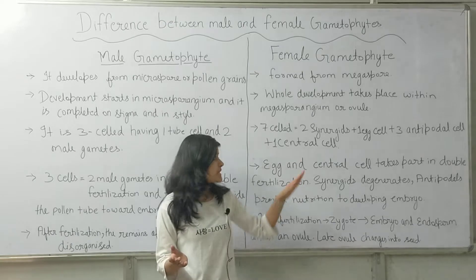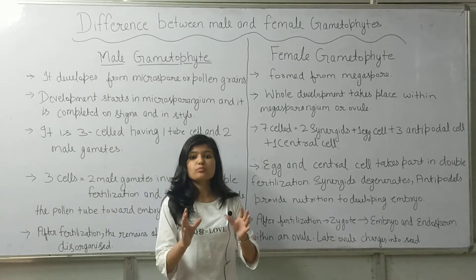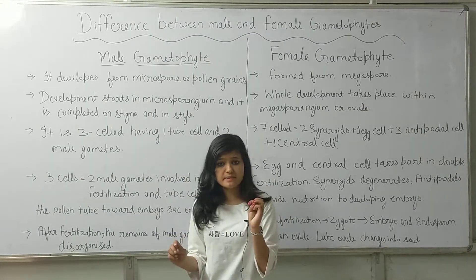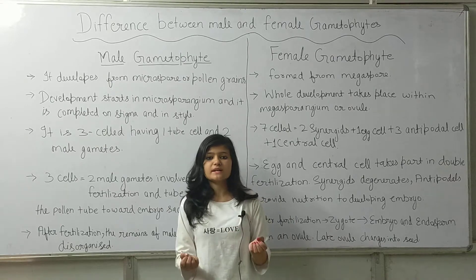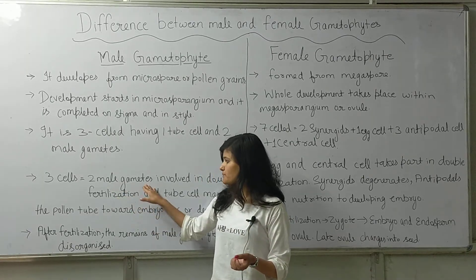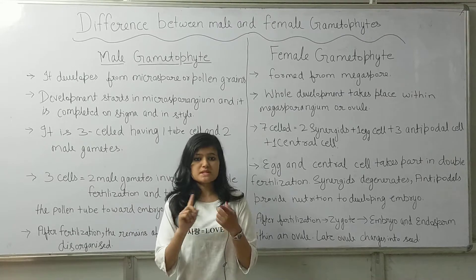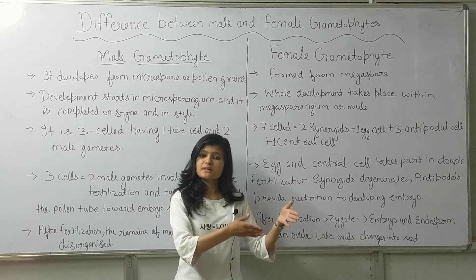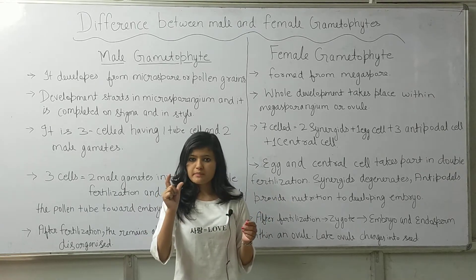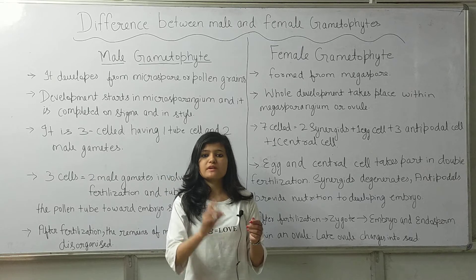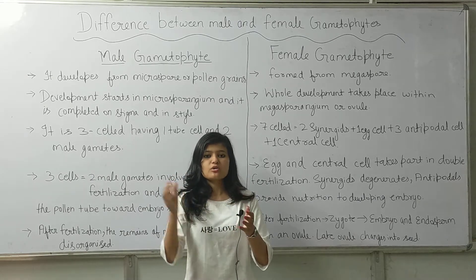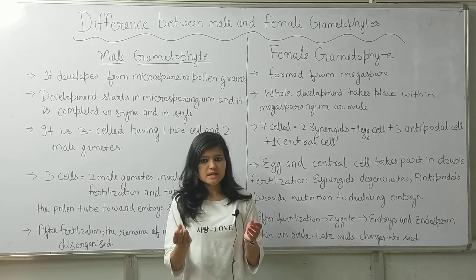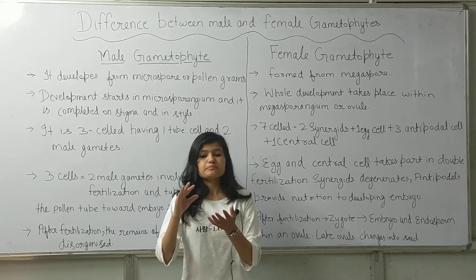In the last video lecture, we studied the female gametophyte. Now, the three cells of the male gametophyte: the two male gametes will fertilize the egg, which leads to embryo formation. The second male gamete will fertilize the central cell to produce a primary endosperm. The tube cell functions to guide the pollen tube.